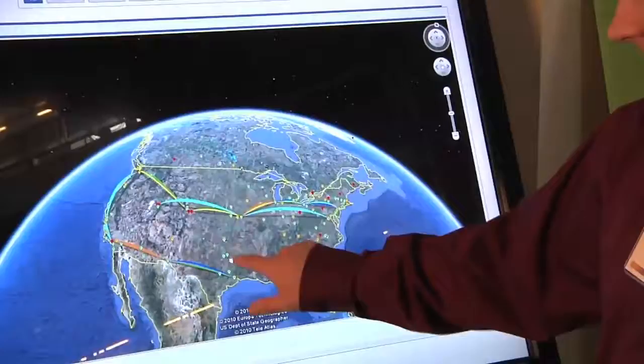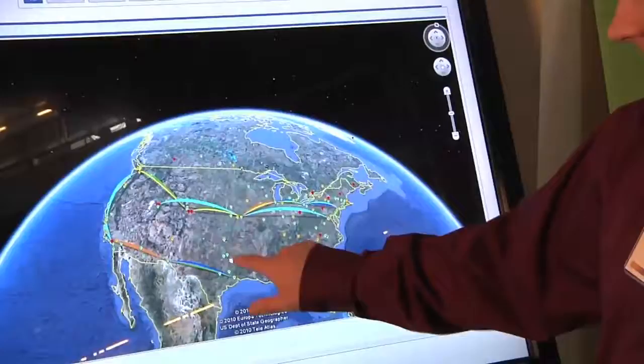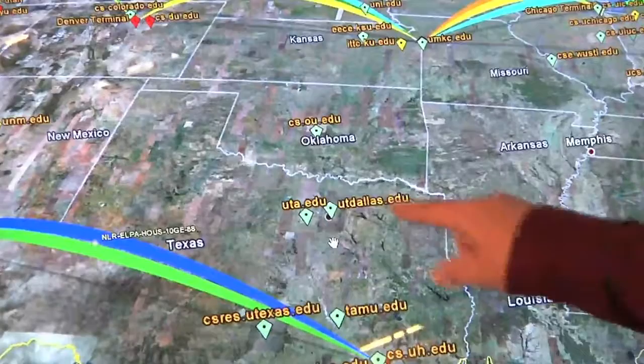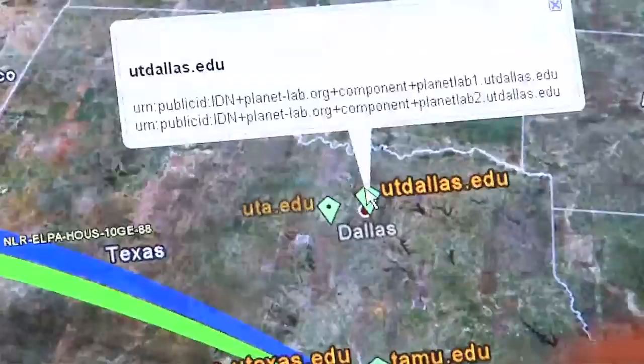For instance, if we zoom in on one of these nodes here, we can see UT Dallas' Planet Lab nodes. These are green, which shows that both of the Planet Lab nodes in this location happen to be up at this time. Click here and get a list of the nodes.